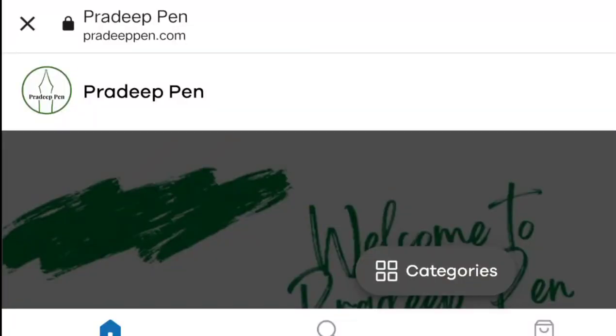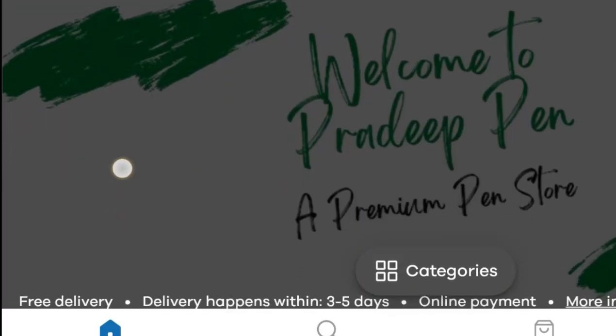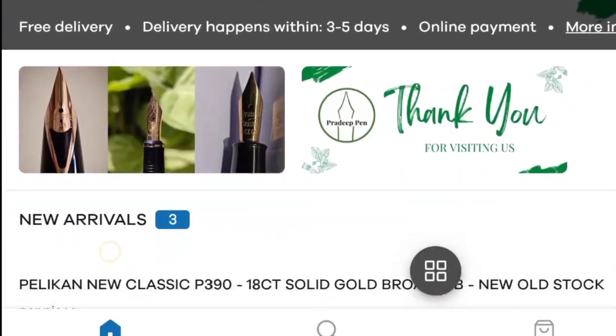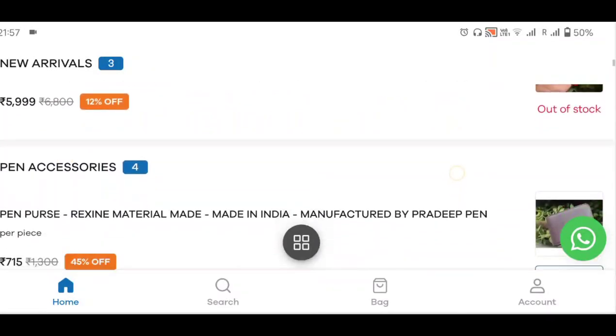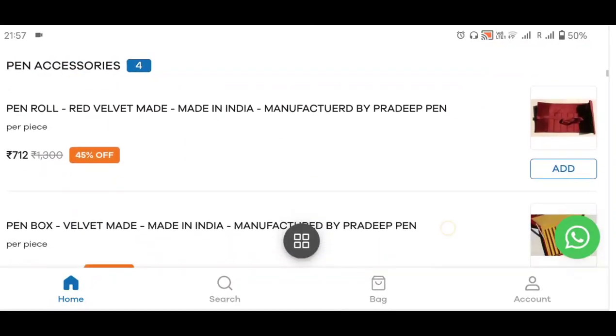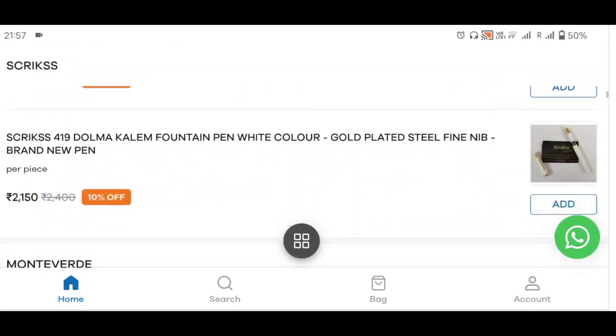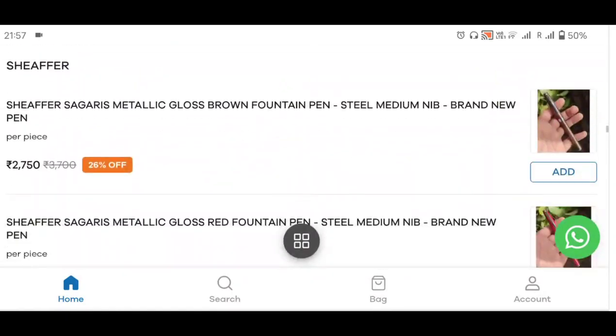Pradipen also runs a website at Pradipen.com where he sells all his products. We can see the available stock with more photos and details on his website. Through the website there is also WhatsApp messaging facility and you can get any clarifications wherever required.